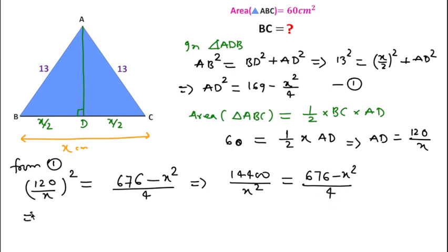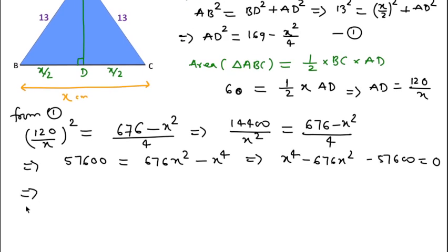Once we multiply, we get 57600 equals 676x square minus x to the power 4. After cross multiplication, this equation can be written as x to the power 4 minus 676x square minus 57600 equals 0.